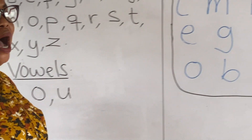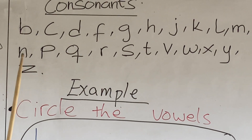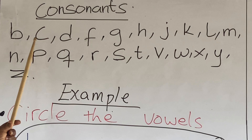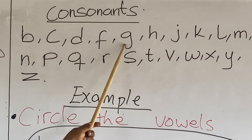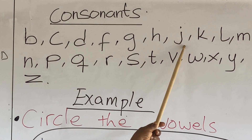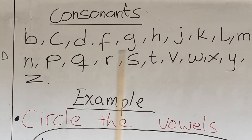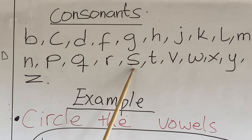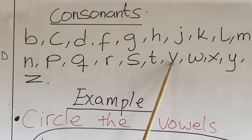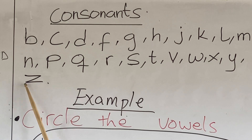We also have the consonants. Let's look at the consonants. We have B, C, D, F, G, H, J, K, L, M, N, P, Q, R, S, T, V, W, X, Y, Z.